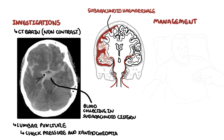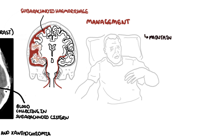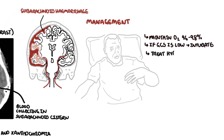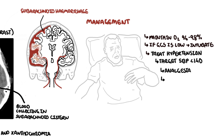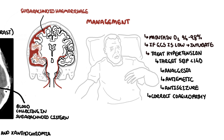Treatment of subarachnoid hemorrhage: it's important to maintain oxygen saturation between 94 to 98%. If the GCS is low, intubation is necessary. Treat hypertension — aim for a systolic blood pressure less than 140 mmHg. Anything over 150 mmHg systolic is associated with re-bleeding. It is also important to avoid hypotension, as this may lead to cerebral ischemia. Analgesia and anti-emetics can be used, as well as anti-epileptic medications. Correct any coagulopathy, such as with vitamin K and prothrombin complex for warfarin reversal.